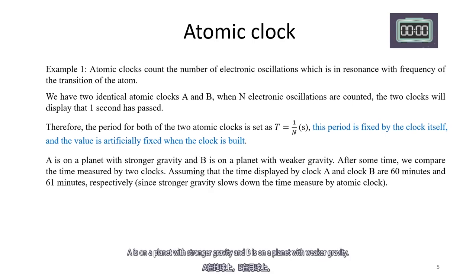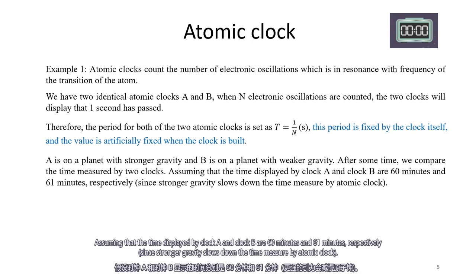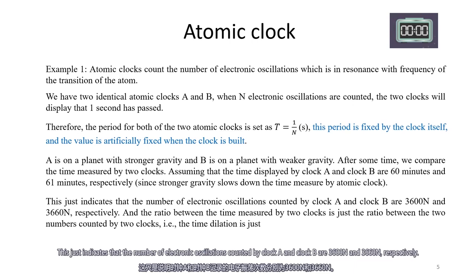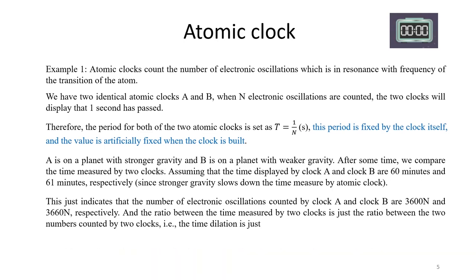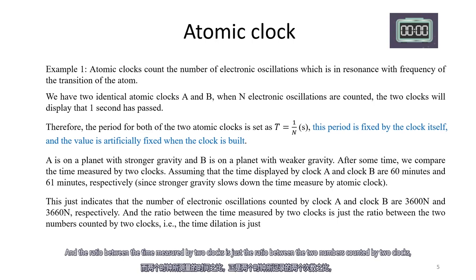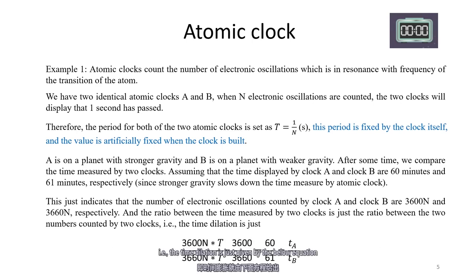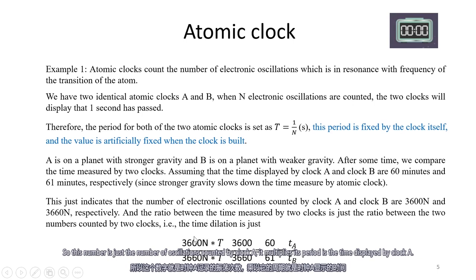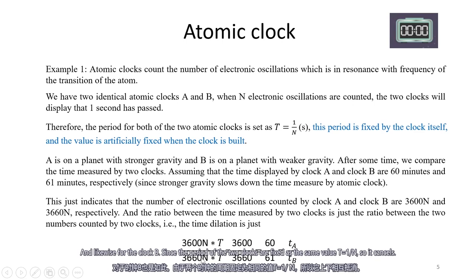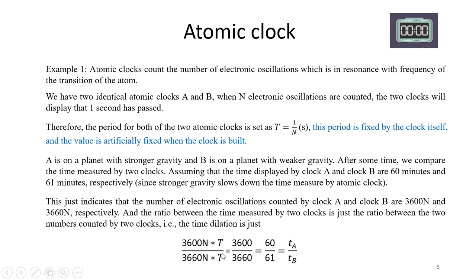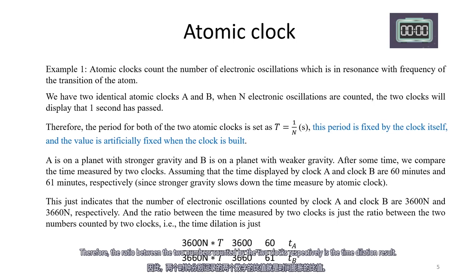Clock A is on a planet with stronger gravity, and clock B is on a planet with weaker gravity. After some time, we compare the time measured by two clocks. Assuming that the time displayed by clock A and clock B are 60 minutes and 61 minutes respectively, this indicates that the number of electronic oscillations counted by clock A and clock B are 3600N and 3660N respectively. The ratio between the time measured by two clocks is just the ratio between the two numbers counted by the two clocks. Therefore, the time dilation is given by this formula. Since the period of the two clocks is fixed at the same value t equal to 1 divided by n, it cancels, and the ratio between the two numbers is just the time dilation result.